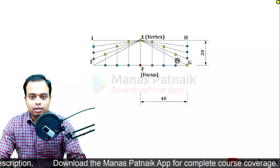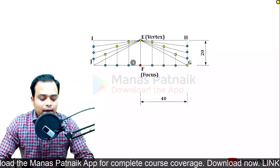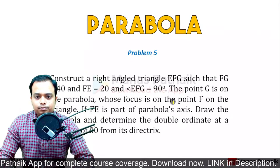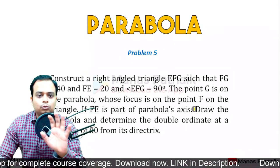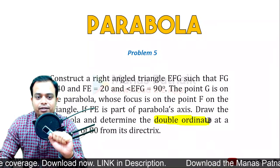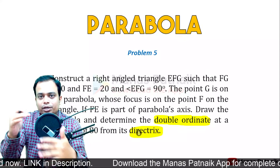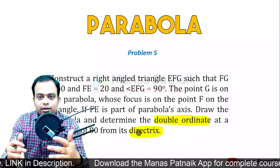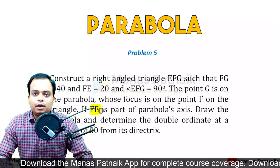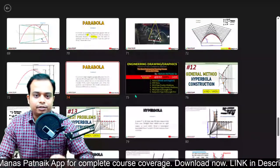We know we need to create the parabola, but we also need to find the directrix to locate the double ordinate. FE is a part of the parabola's axis. Simply extend it randomly in both directions - this is the axis line along which the parabola is oriented.